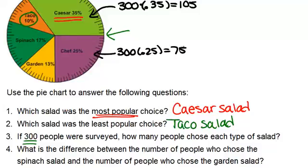For the garden salad, you can do the same thing, and do 300 times 0.13, and you get 39 people.